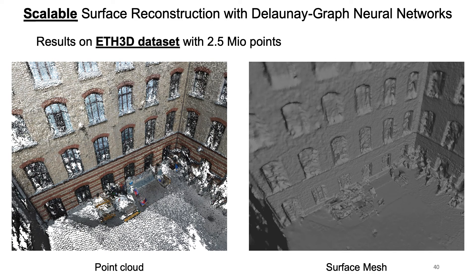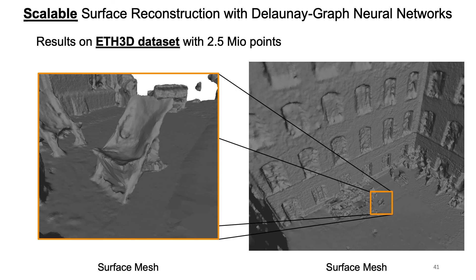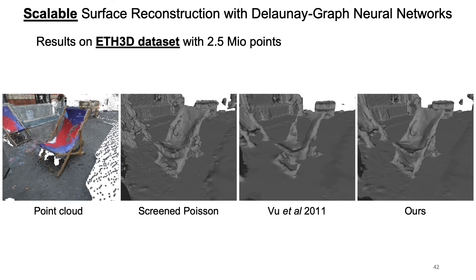Here we show another scene from the ETH3D dataset with around 2.5 million points together with our reconstructed surface. We compare to screened Poisson reconstruction and another energy-based method — both are among the few surface reconstruction methods that can scale to large scenes — but our algorithm still produces a more accurate and more complete reconstruction. The datasets used for evaluation are already online, and our code and pre-trained models will also be available soon.